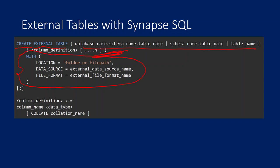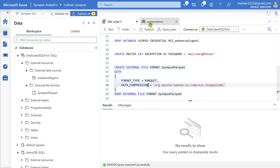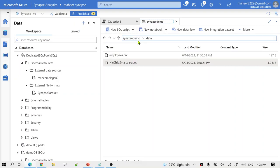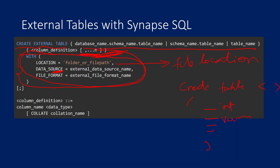This WITH block is something specific to external tables. If you try to create a normal table, it is just create table, then table name, then columns. But for external tables, along with the column definitions, you need this WITH block where you define the file location — which file you want to read. In my case, I am creating the external table on top of that parquet file, so I provide that file's location. Then the data source — for the storage where that file is available, use the external data source you created. Then the file format — whether it is parquet or CSV — use the external file format object you created.